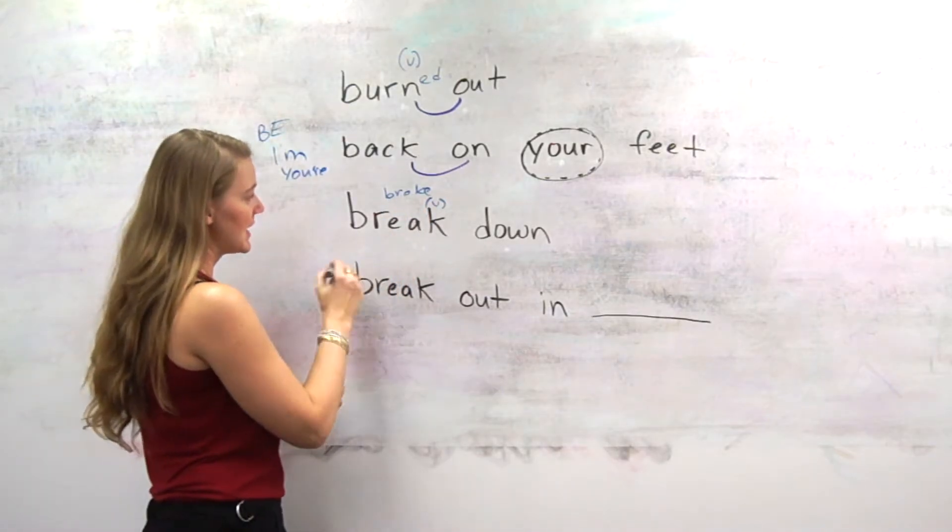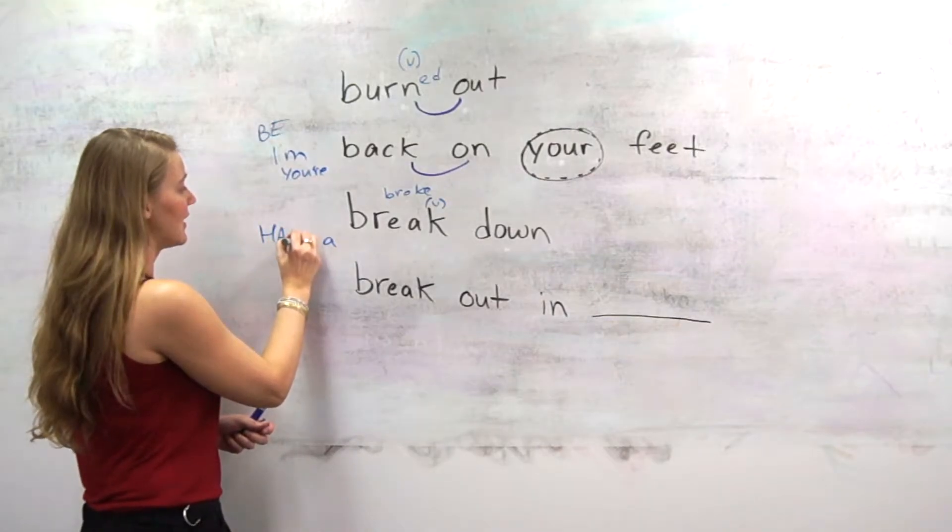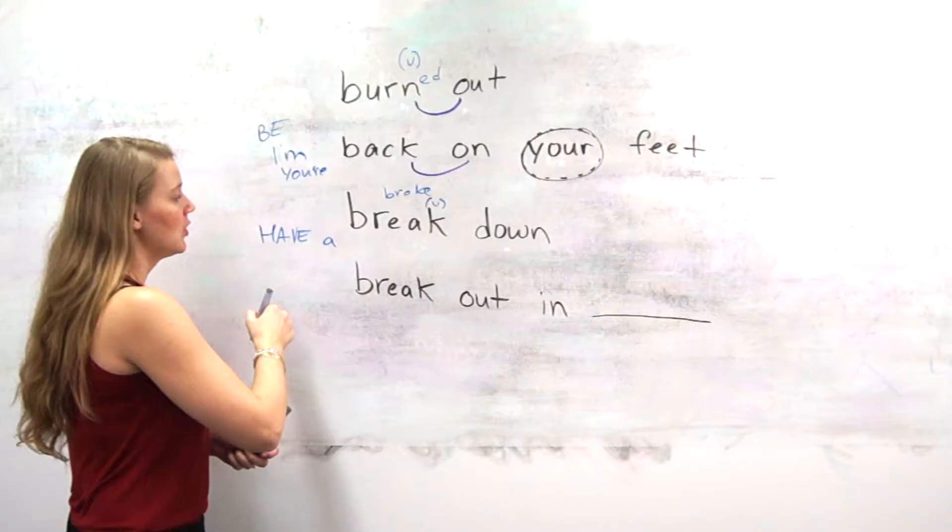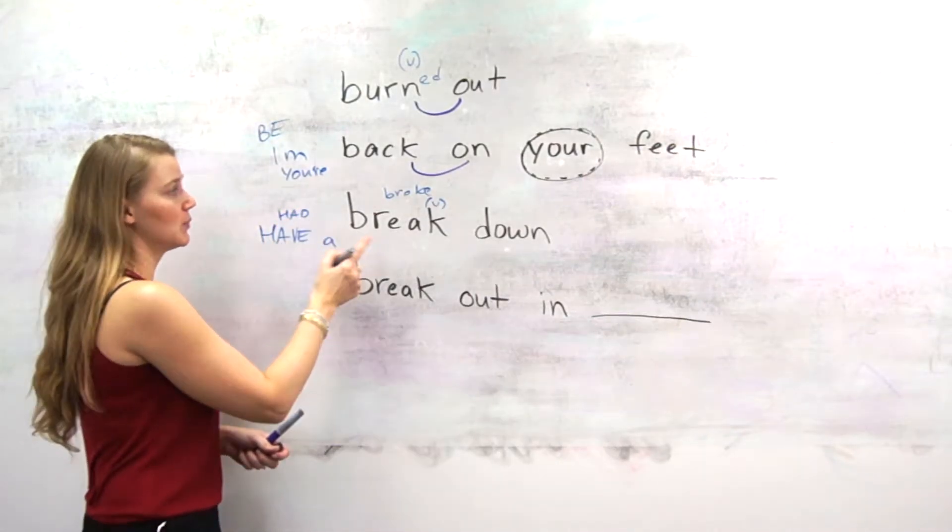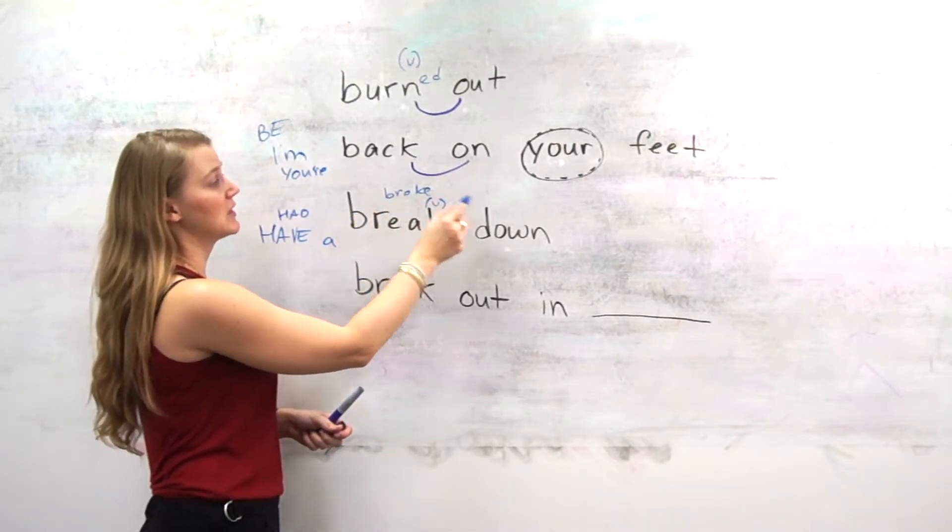If you're going to use it as a noun, you want to say a breakdown. And normally we use the verb have, have, you have a breakdown. For example, last year I had a breakdown or last year I broke down.